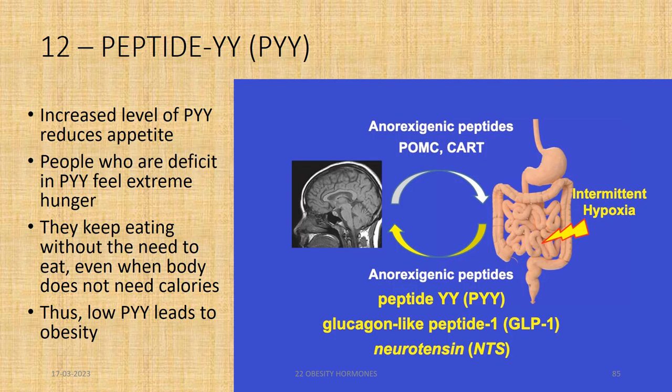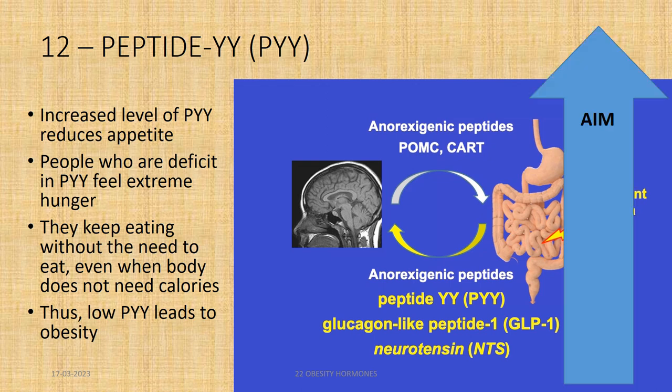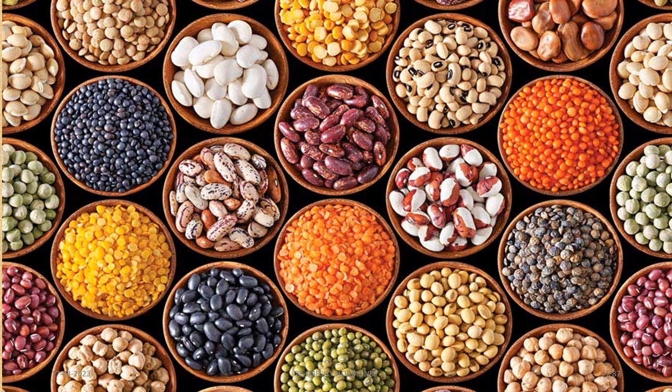Peptide YY (PYY) is another important hormone. Increased levels of PYY reduce appetite. People deficient in PYY feel extreme and repeated hunger, eating even when the body does not need calories. Low PYY leads to obesity, so our aim should be to increase PYY hormone levels. Food rich in plant or phyto-proteins leads to an increase in PYY.